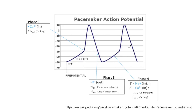With the pacemaker potential, there are only three phases to consider, and these are phase 4, 0, and 3. The resting membrane potential for pacemaker cells is about minus 75 millivolts, which means they're slightly more excitable than the ventricular myocytes.